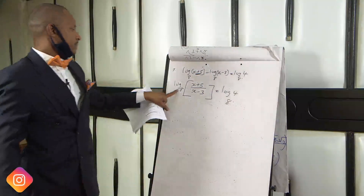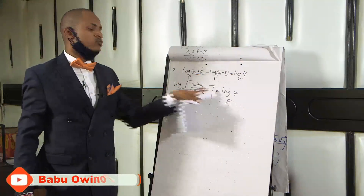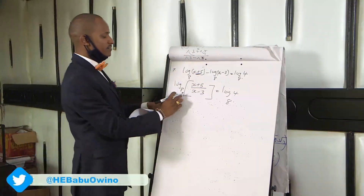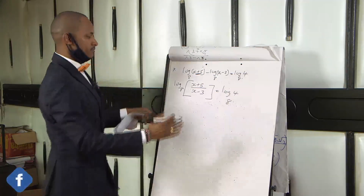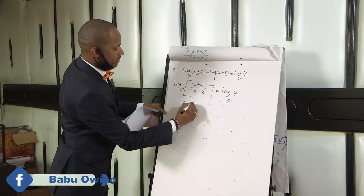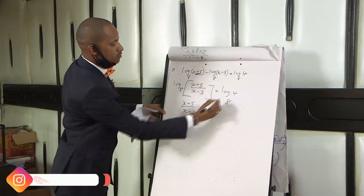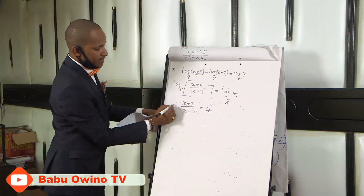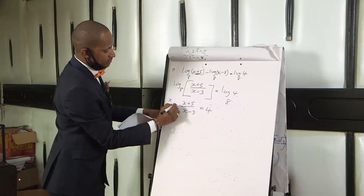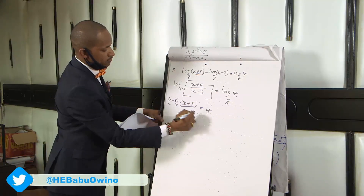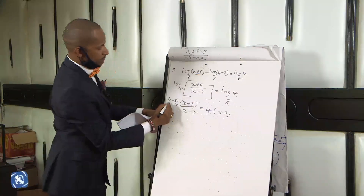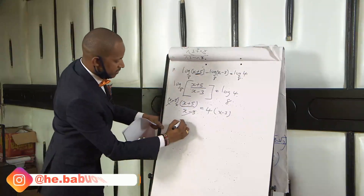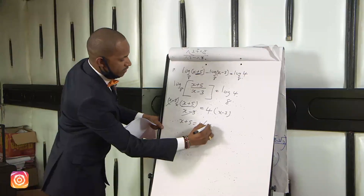Then in mathematics, the logs to the same bases will automatically drop. Don't cancel them — mathematically, if you cancel, it is not correct. So you don't divide by log to base 8. You just drop them. When you drop them, you remain with x plus 5 divide by x minus 3 equals 4. Because the bases are the same, you cross-multiply both sides by x minus 3. So x minus 3 and x minus 3 cancel, and you remain with x plus 5 equals 4 into x minus 3.